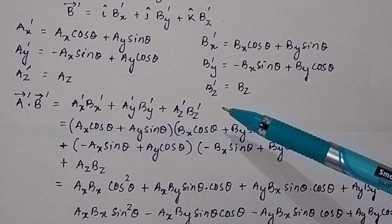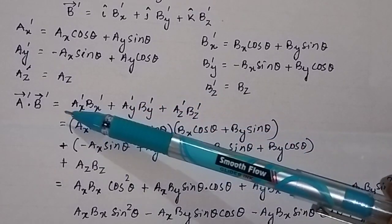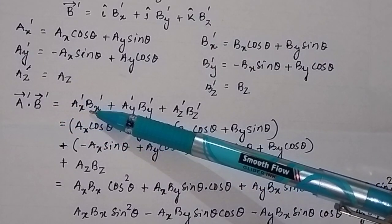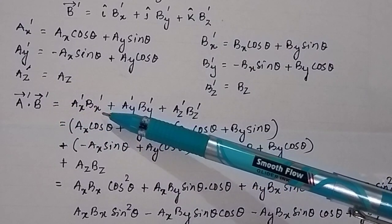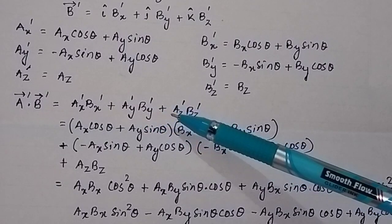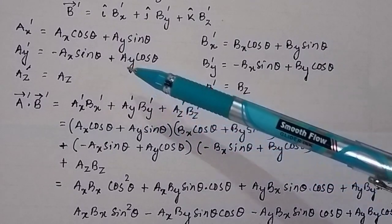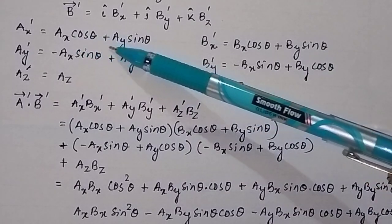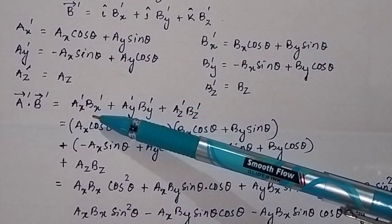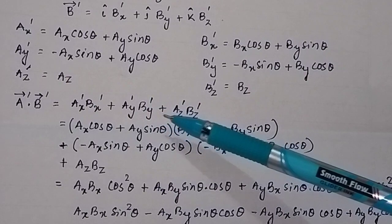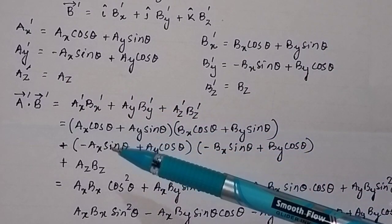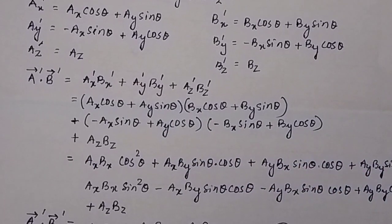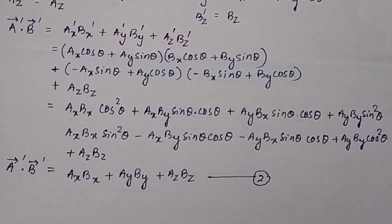Now we will find the dot product after rotation. After rotation, the dot product A-prime·B-prime will be equal to AX-prime times BX-prime plus AY-prime times BY-prime plus AZ-prime times BZ-prime. We substitute the values: AX-prime equals AX cos theta plus AY sin theta, and similarly for BX-prime, AY-prime, BY-prime, AZ-prime, and BZ-prime.